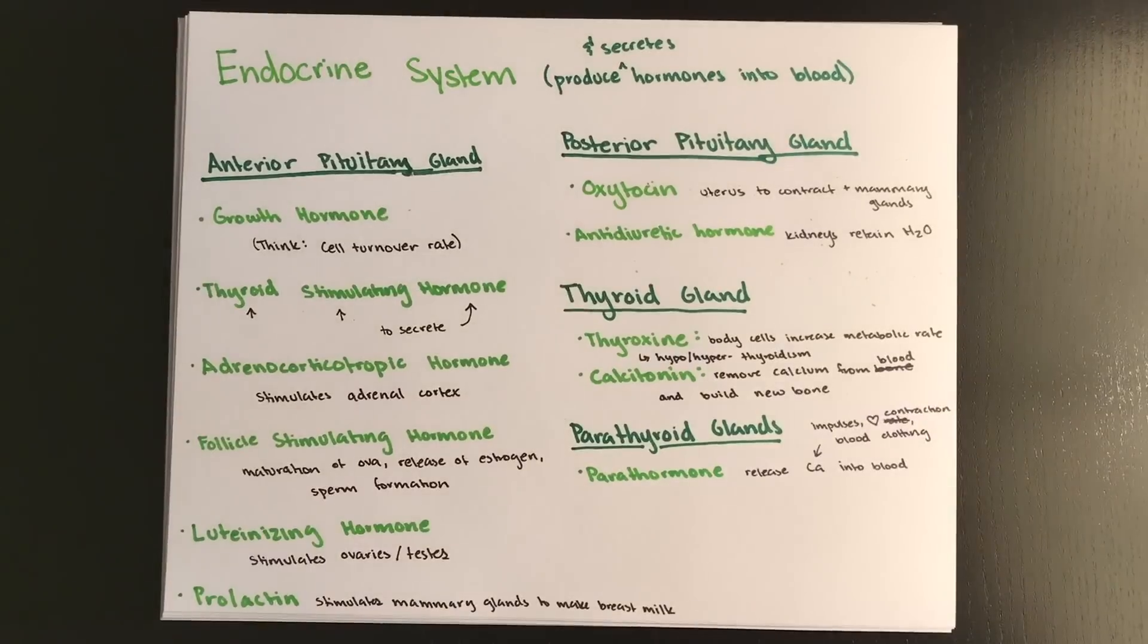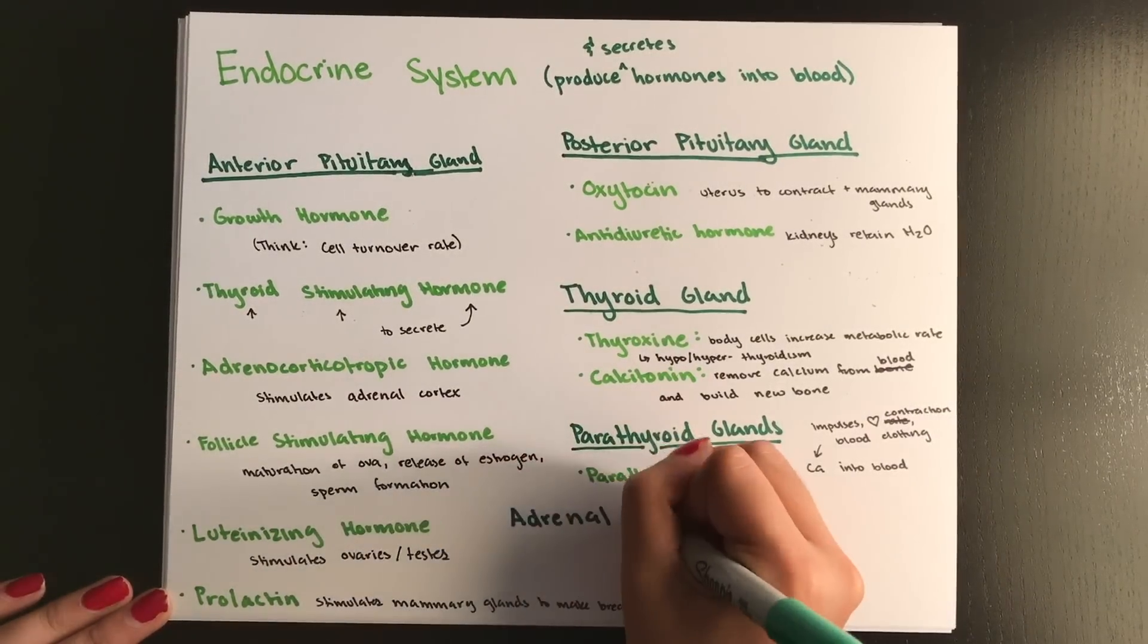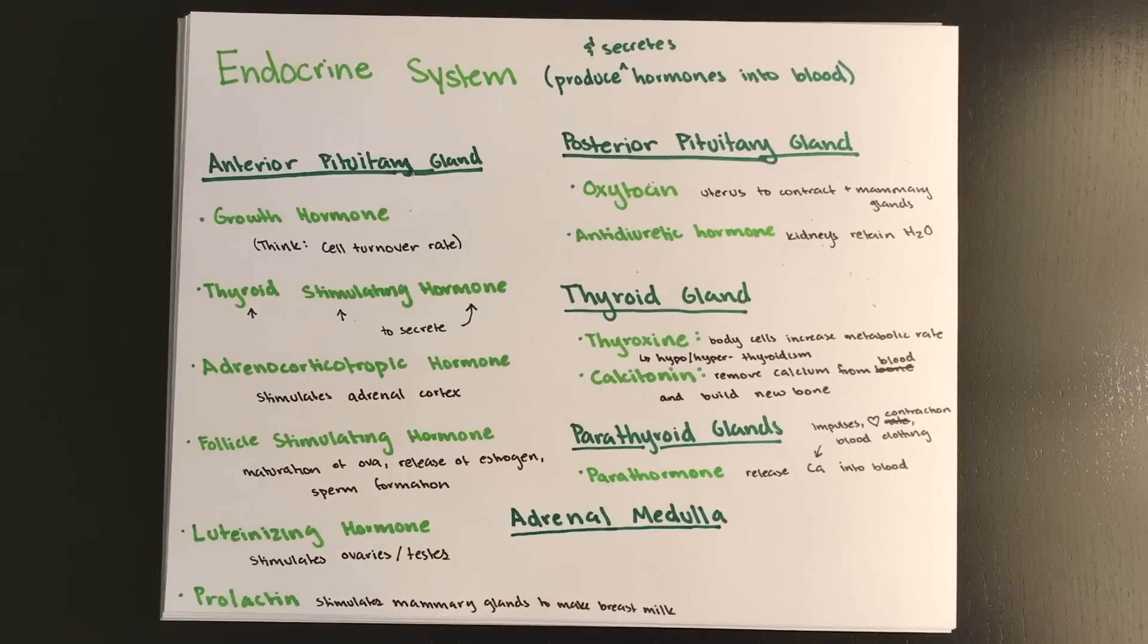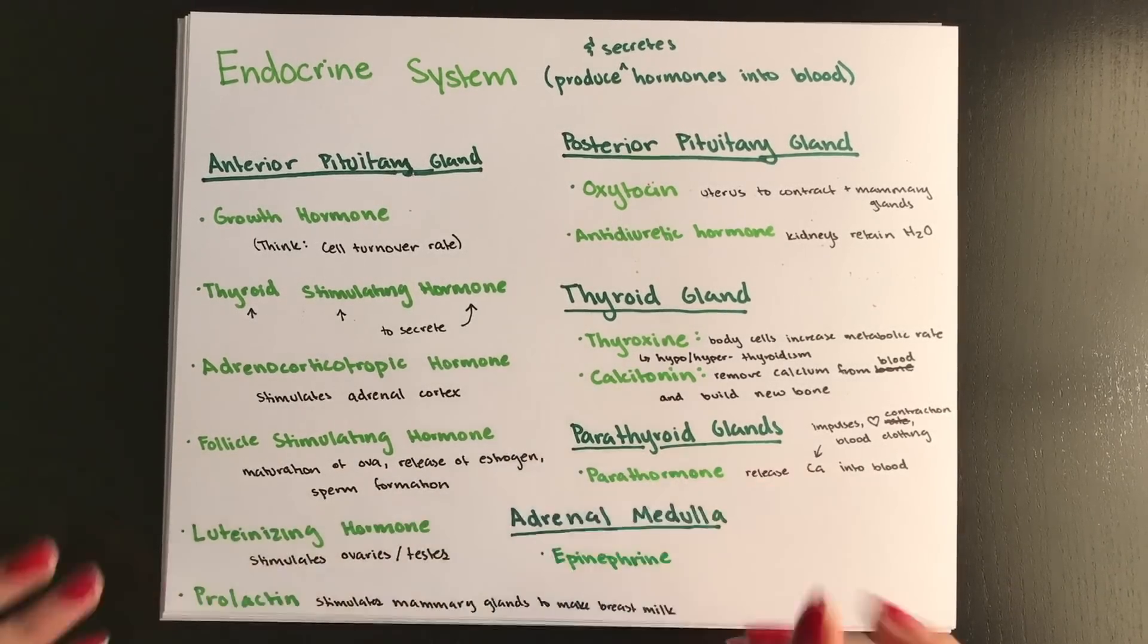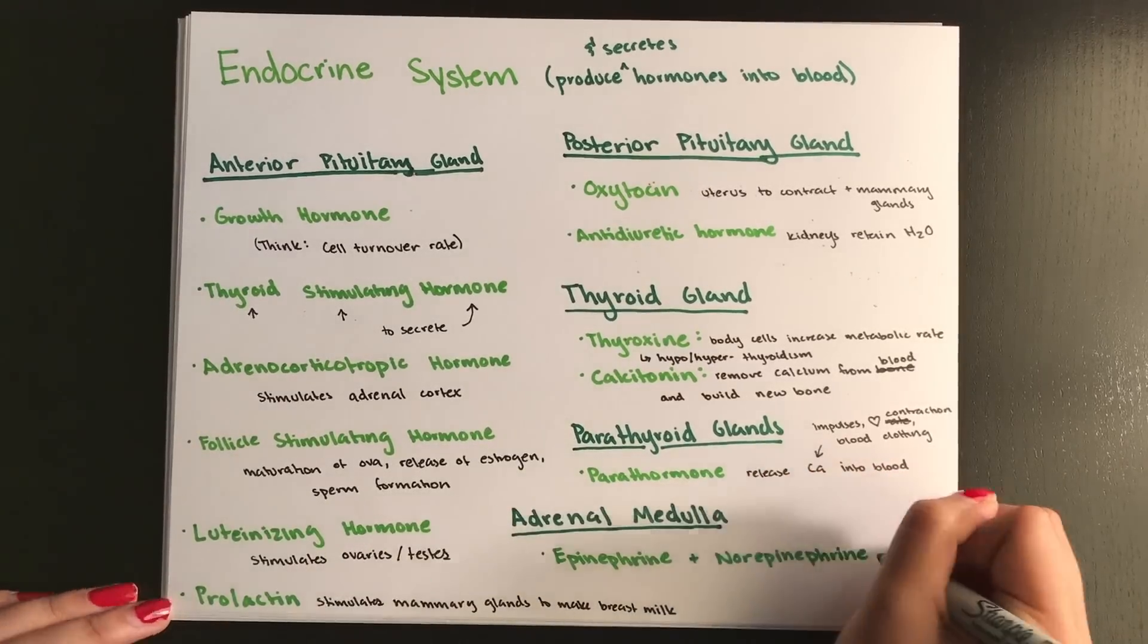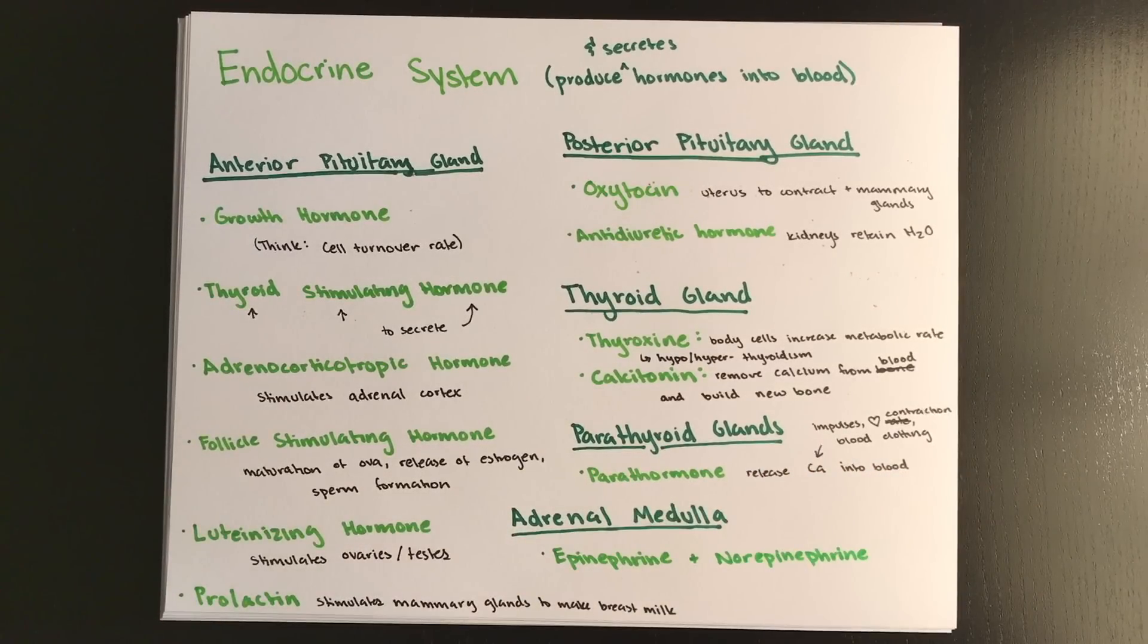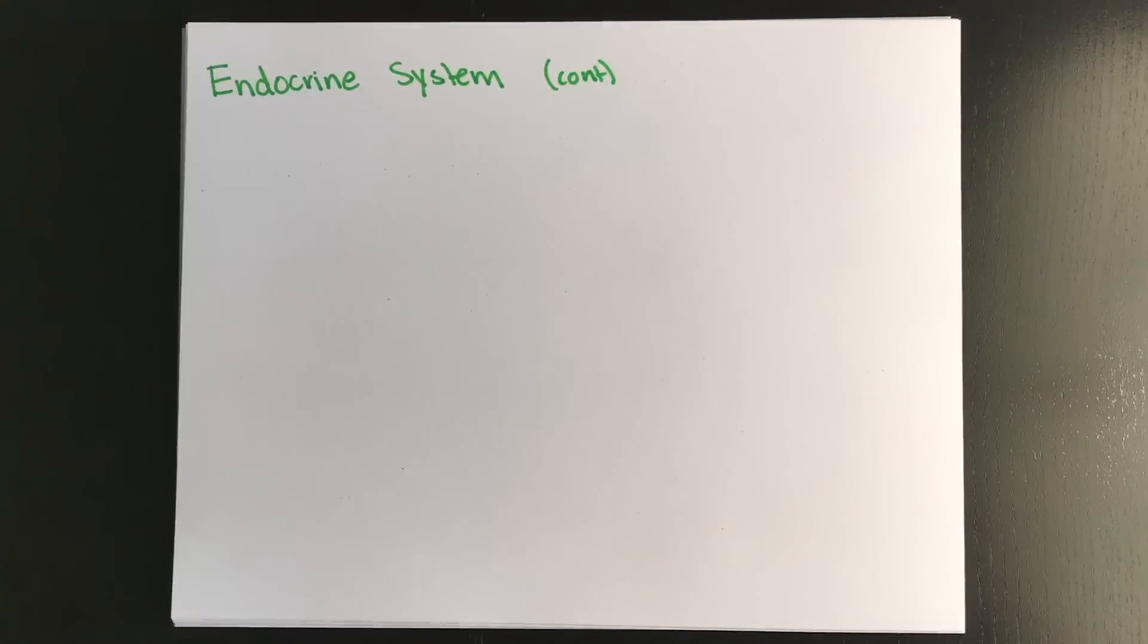Now we're going to talk about your adrenal glands, which sit on top of the kidney, and they are made up of the adrenal medulla and adrenal cortex. The adrenal medulla secretes epinephrine, which is also known as adrenaline, and it secretes norepinephrine. The adrenal cortex secretes steroids, and these come in three major classes.